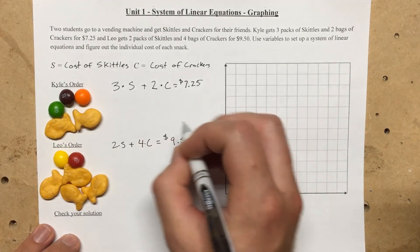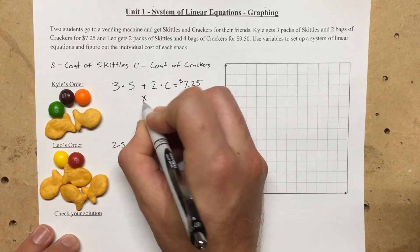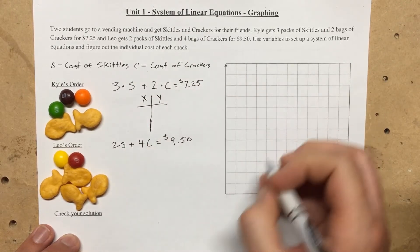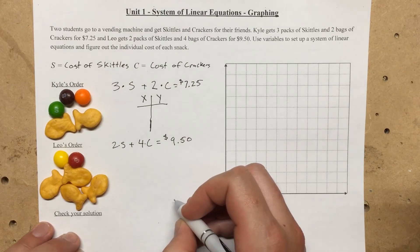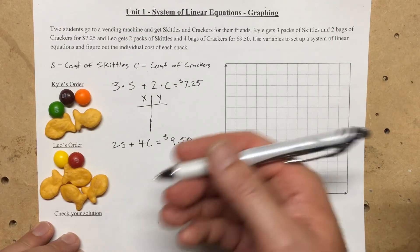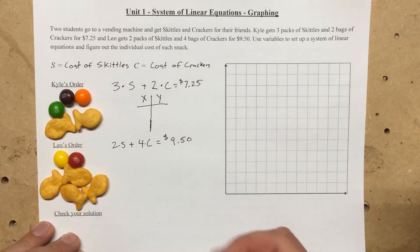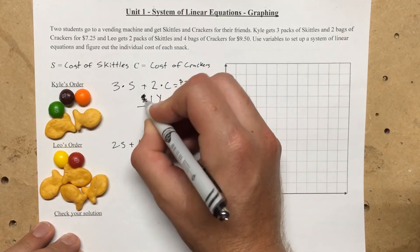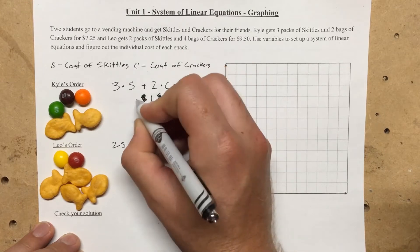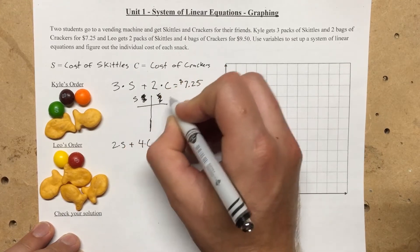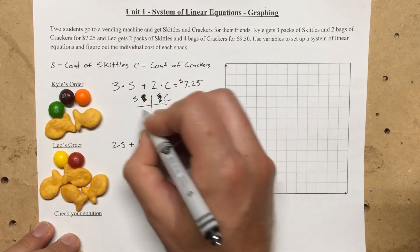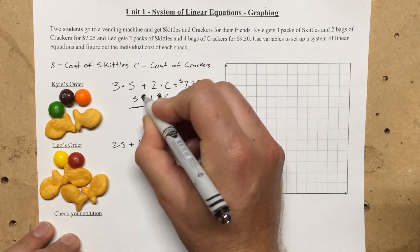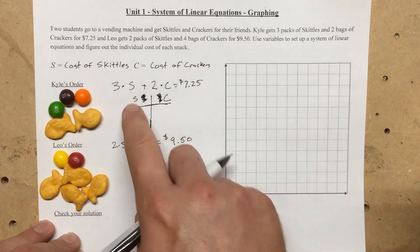To graph in standard form, we make an s and c table. What you want to do is find your s and c intercepts. I completely messed up — this is not x and y anymore, this is going to be s and c — for skittles and crackers. So we'll have skittles on the horizontal axis and crackers on the vertical axis.